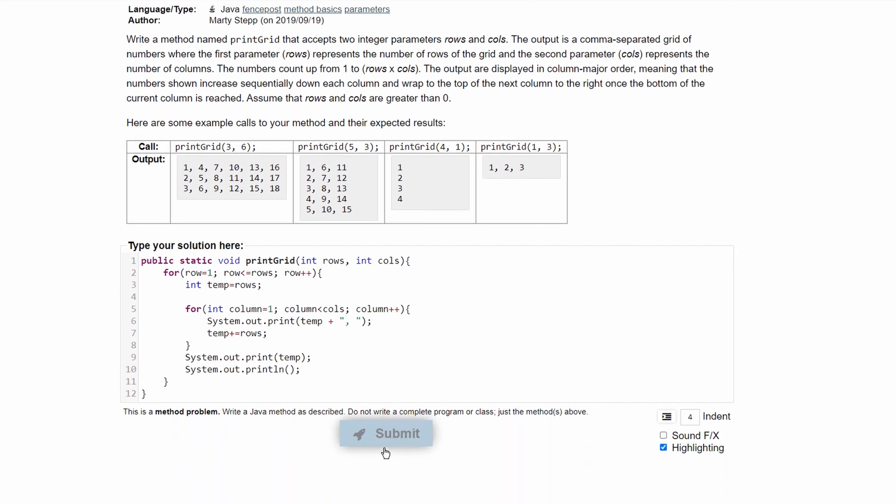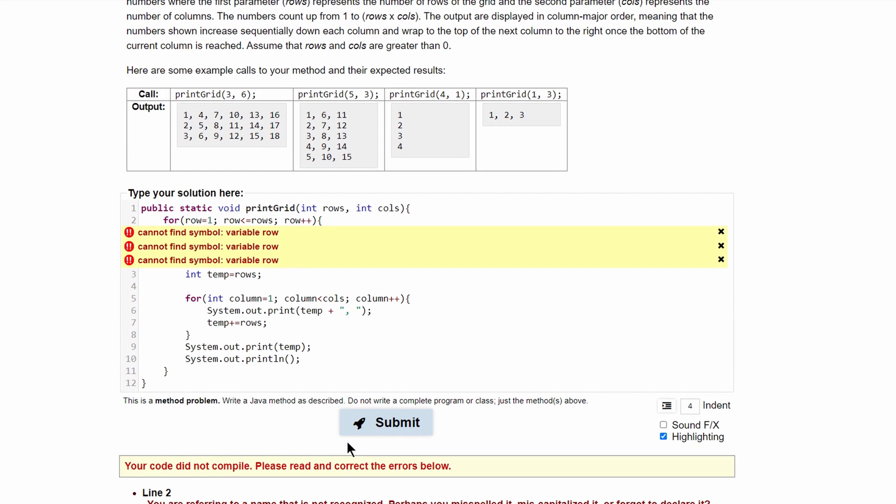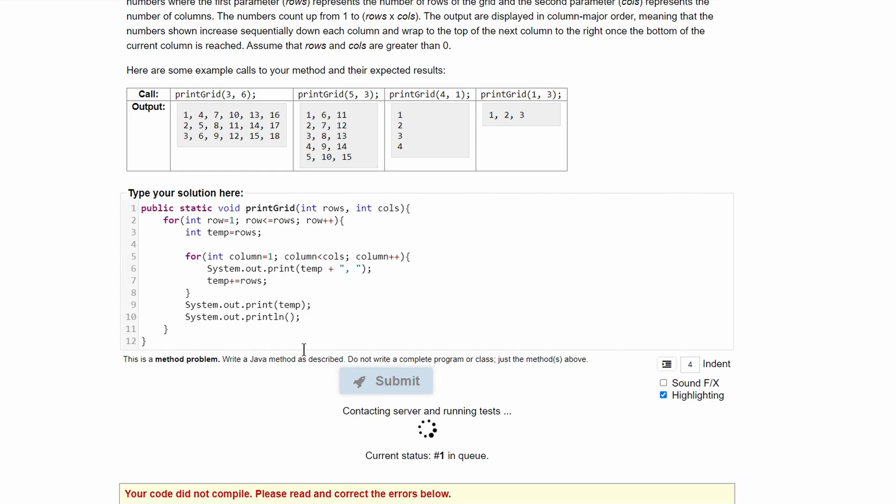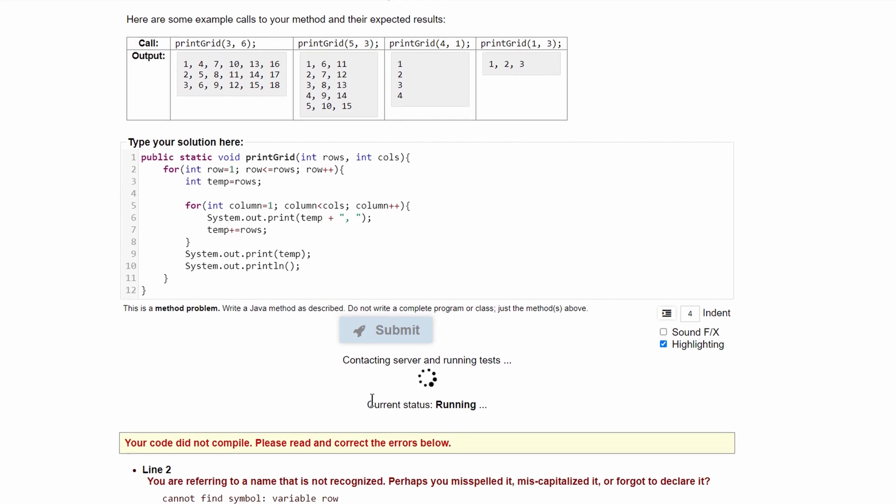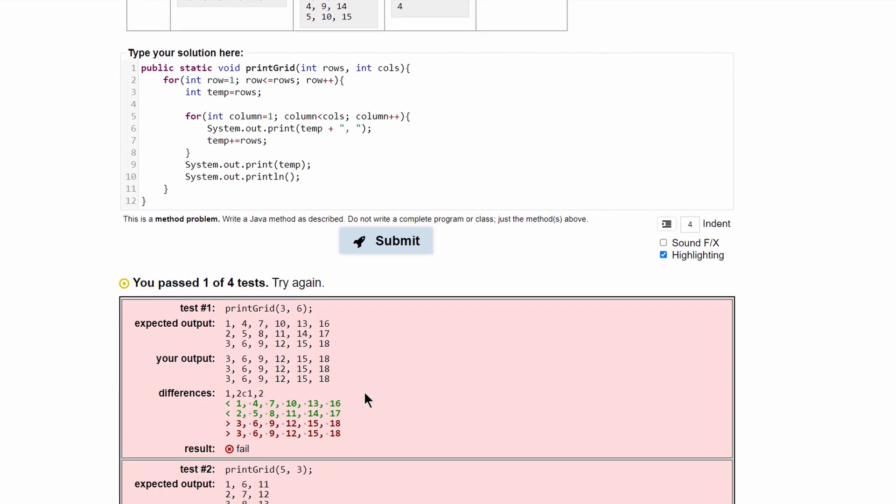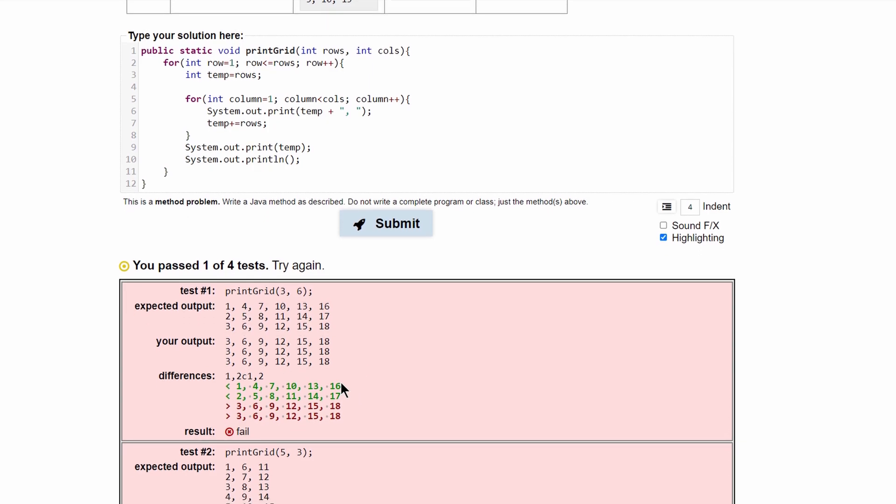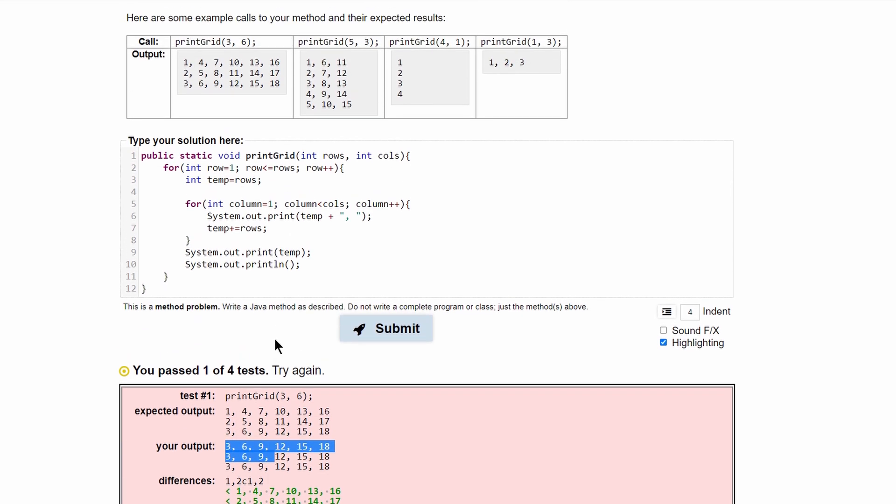And if we submit it, we have an issue. We need to initialize row. So that needs to be an int. And when we run it, we have not passed the test. Seems that we have an error somewhere. So we can look back at the code.